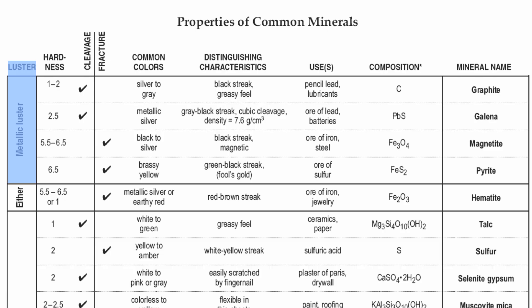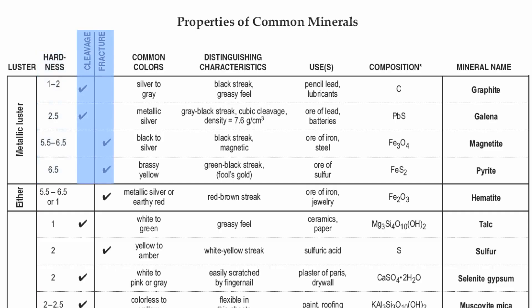Once you figure out the luster of a mineral, you'll know exactly where in the chart to go. So you have your metallic luster. Next over is going to be your hardness. With the metallic lusters, it goes from 1 to 6.5. Remember, anything less than 5.5 is not going to scratch glass; anything greater than 5.5 will scratch glass. Next section over is going to be the way a mineral breaks — cleavage breaks along a flat surface, fracture along an uneven surface.